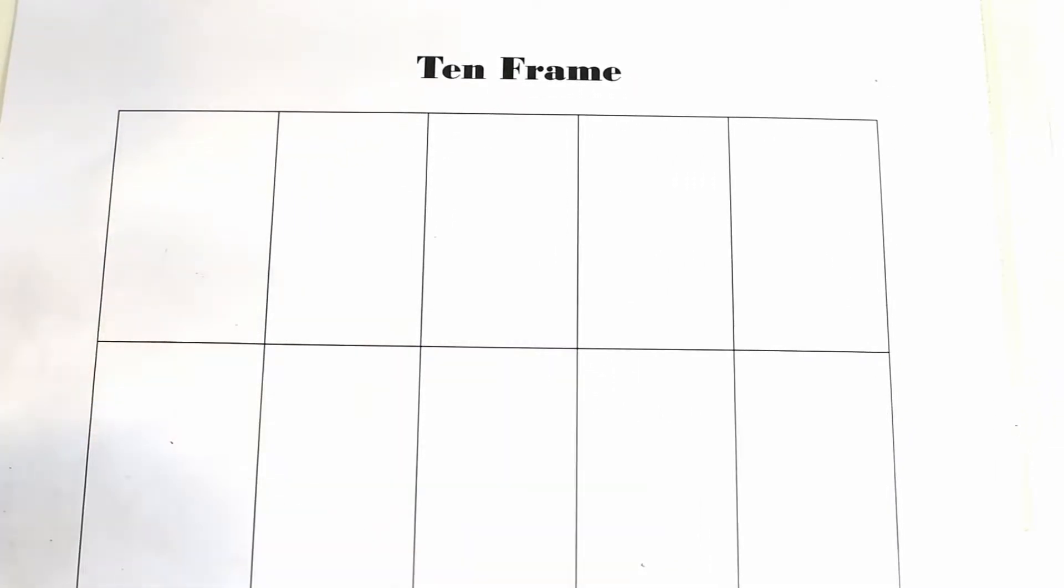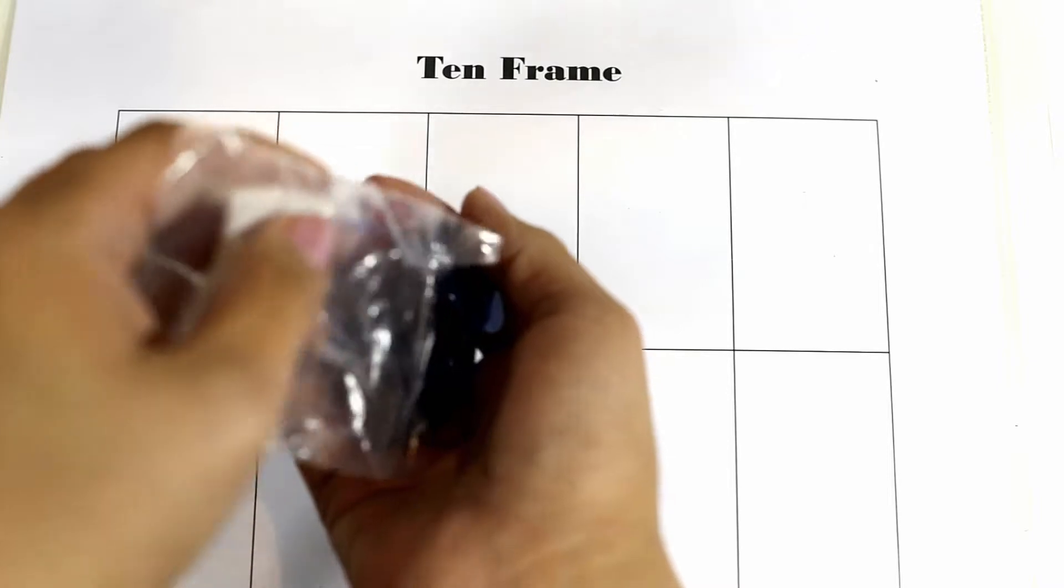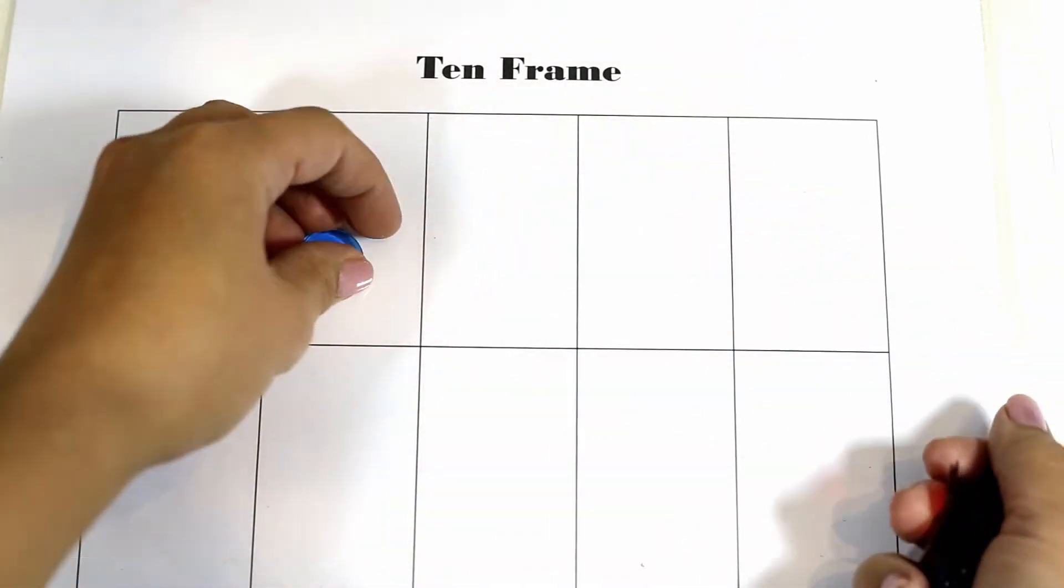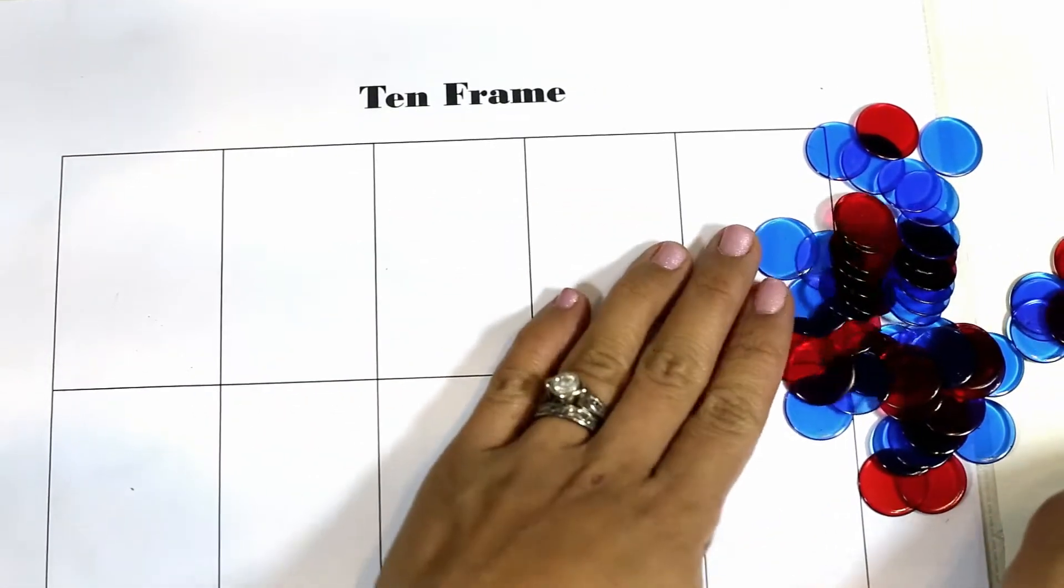The mat I basically just put it in a sheet protector for these types of activities and I have counters that I grabbed from a different board game but you can use different kinds of counters when doing this activity. You can use anything around your house really.